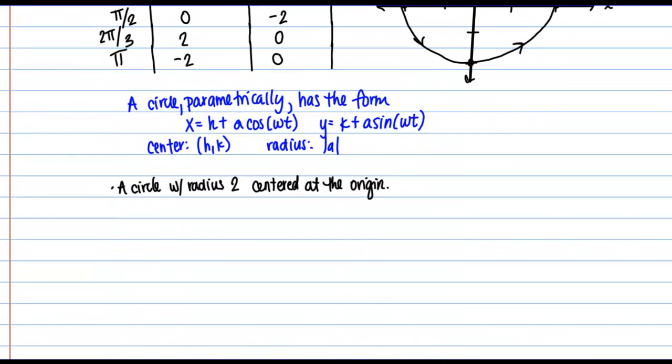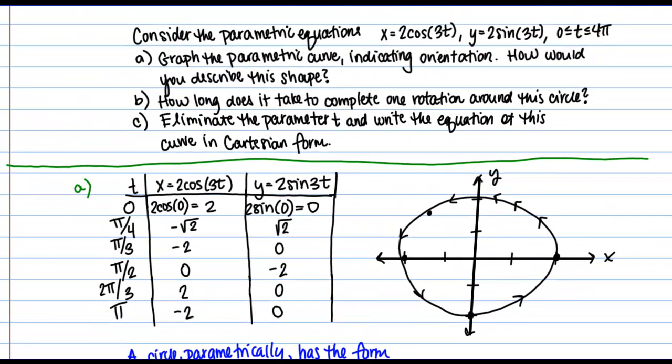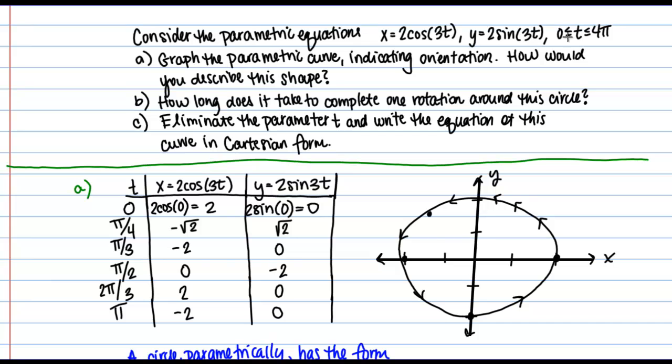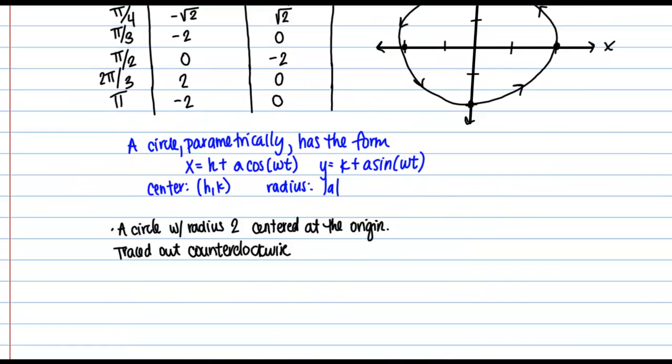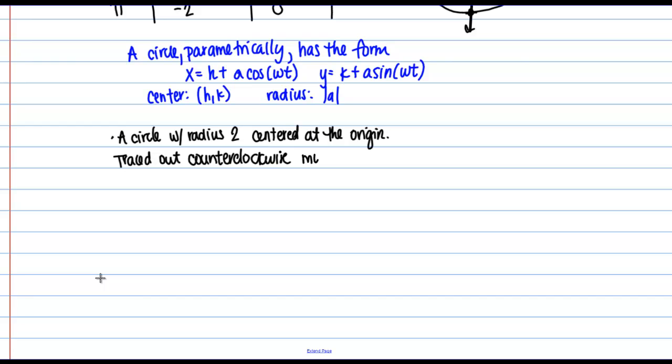And now some other important facts about this circle is that it's traced out counterclockwise. And also the circle is going to be traced out multiple times over our T interval from 0 to 4π. Right? We only plotted from 0 to π and we had already started going back around the circle. So over this interval of 4π we're going to traverse this circle multiple times. And we'll talk a little bit more about that in part B.